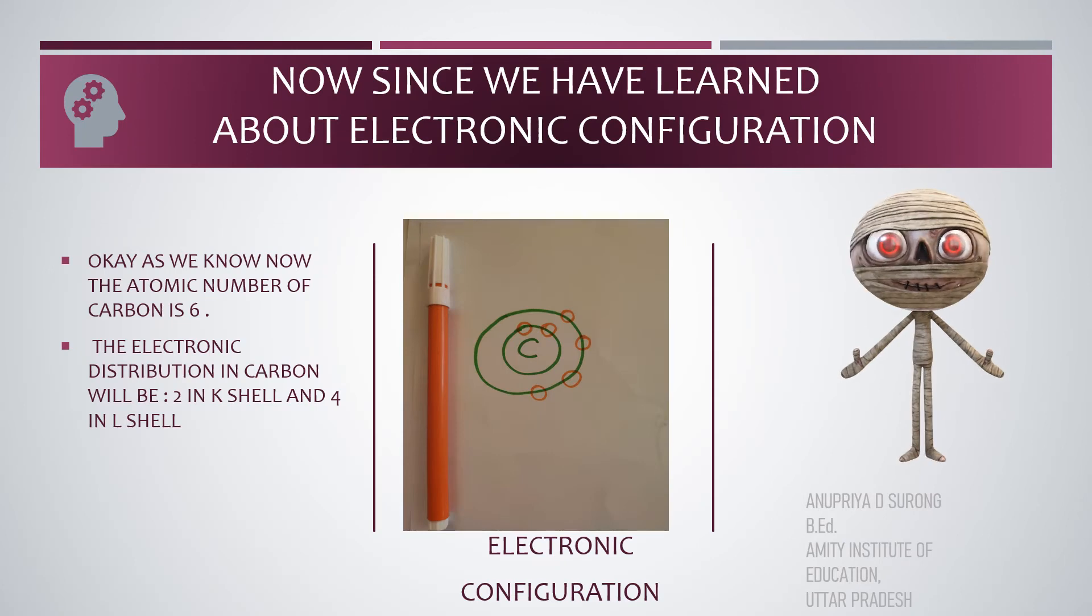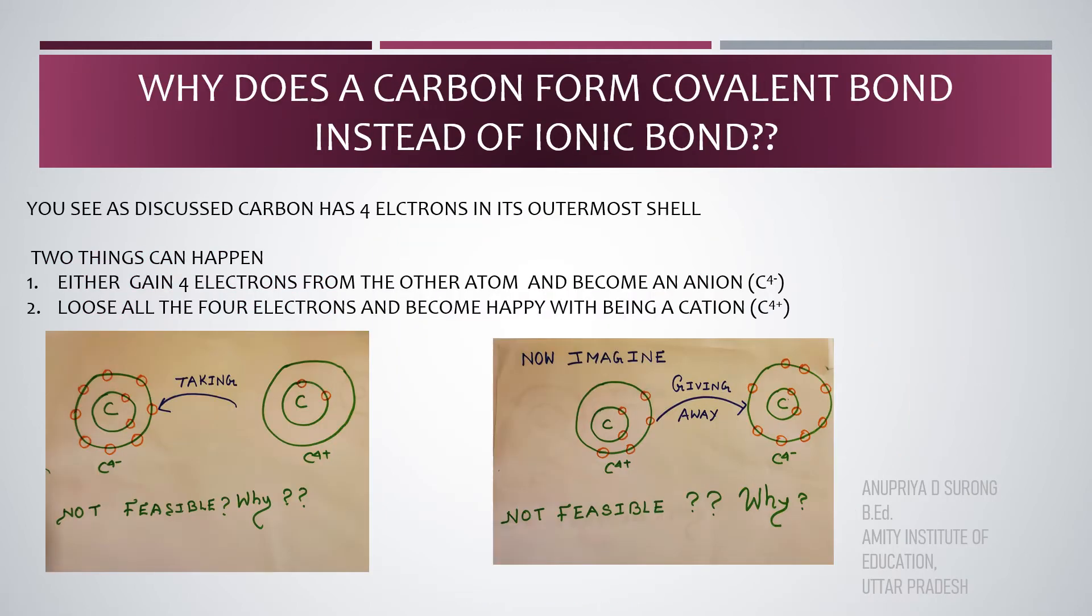Okay, as we know now, the atomic number of carbon is 6, so the electronic distribution in carbon will be 2 in K shell and 4 in L shell. Remember, the capacity for K shell is 2 electrons, so among the 6, 2 electrons are in the K shell, and the rest 4 in the L shell. As discussed, carbon has 4 electrons in its outermost shell. I have drawn 2 pictures for you. One is in the left side, and the other one is in the right side. Now, 2 things can happen.